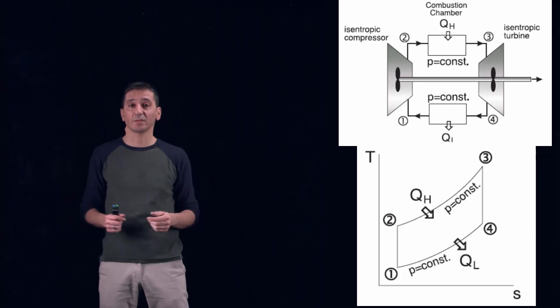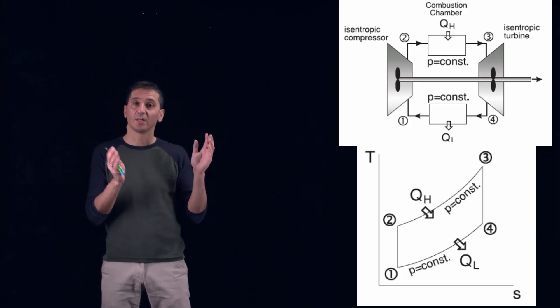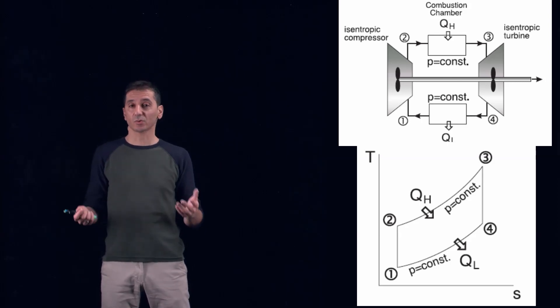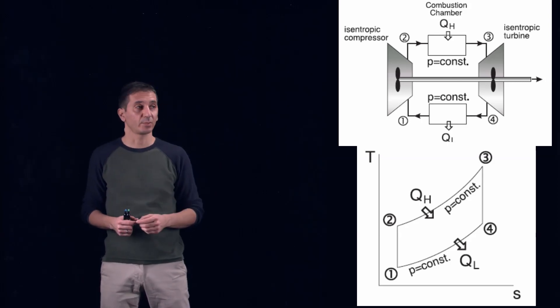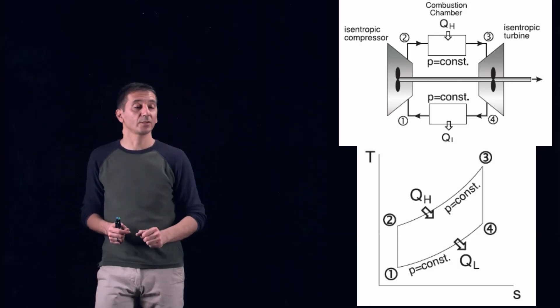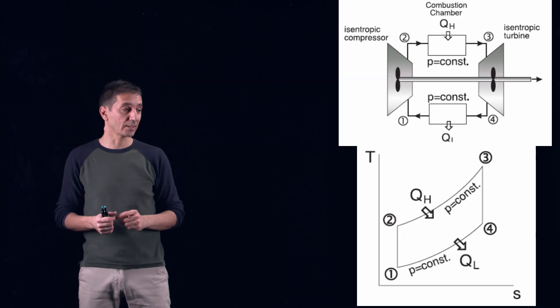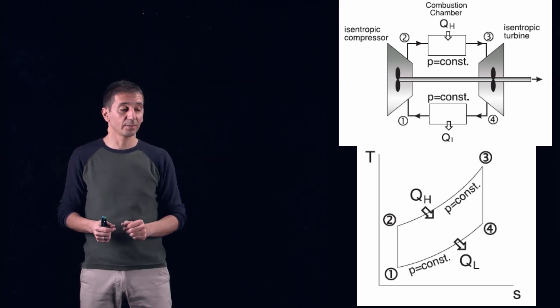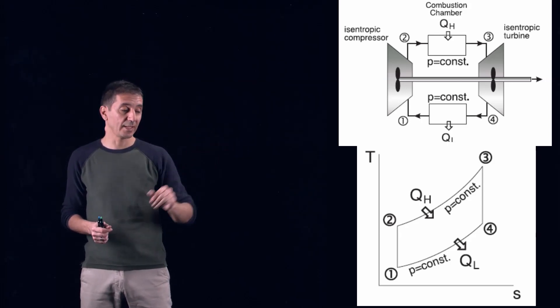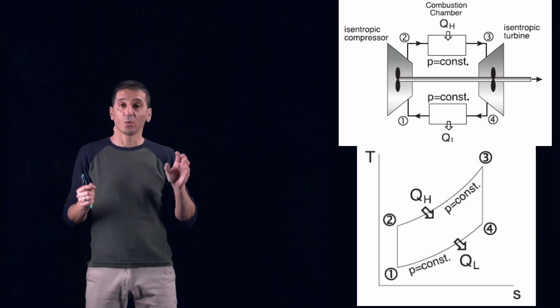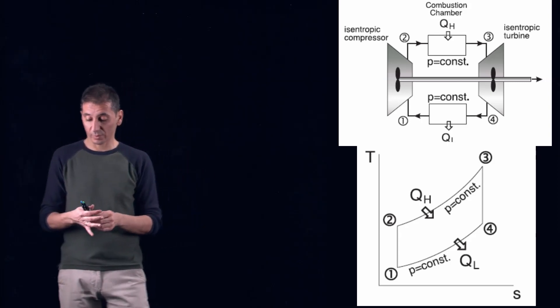Now that we understood what is gas power cycle, let's try to analyze it from a thermodynamic point of view. So here on the top, you will see the sketch of our Brayton cycle and on the bottom, you will see the corresponding TS diagram. What do we have? We have four devices.